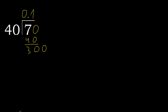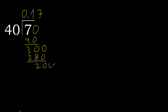The point is here. Bring down to get 300. 40 multiplied by 8 is 320 — that is greater. 40 multiplied by 7 is 280 — it is not greater. Subtract, complete.